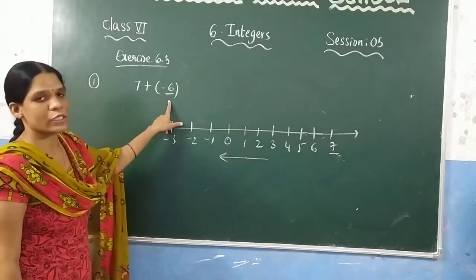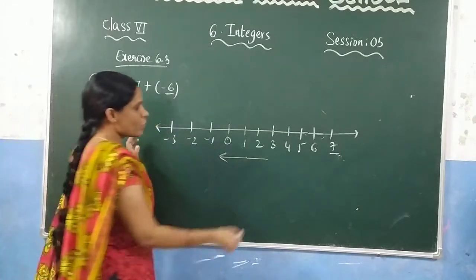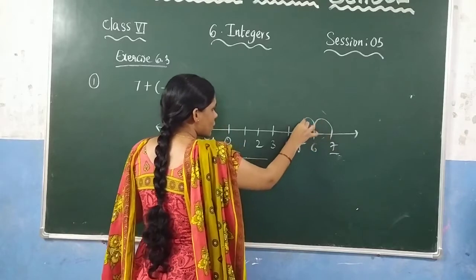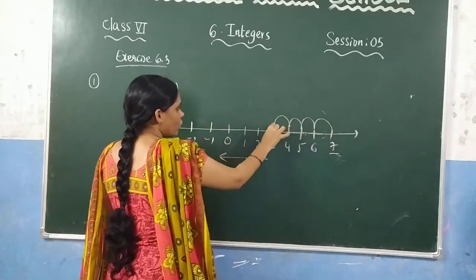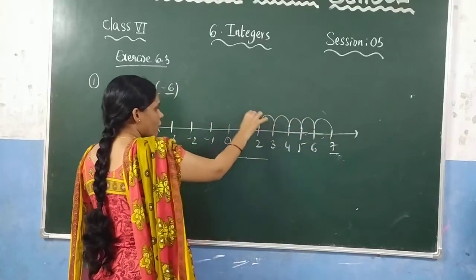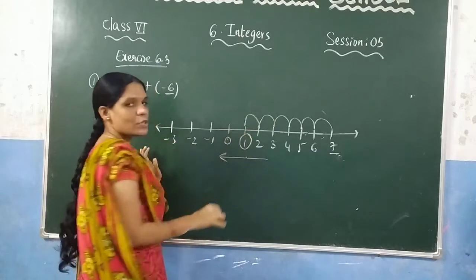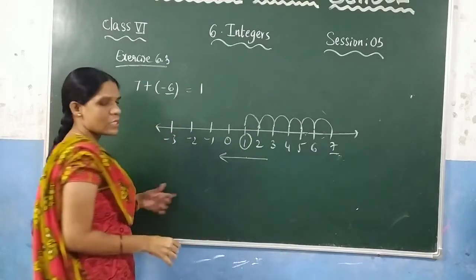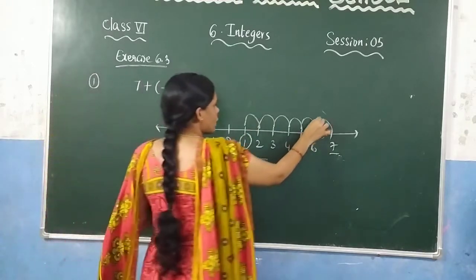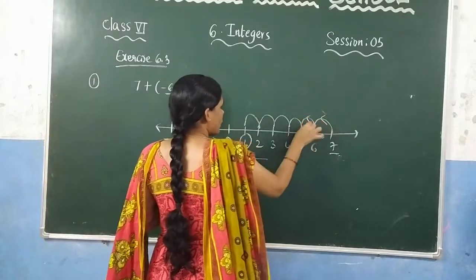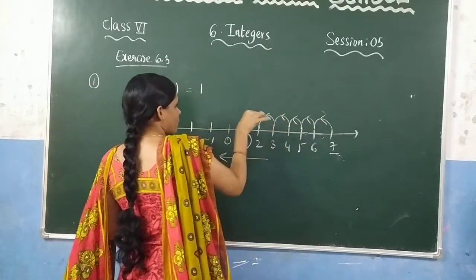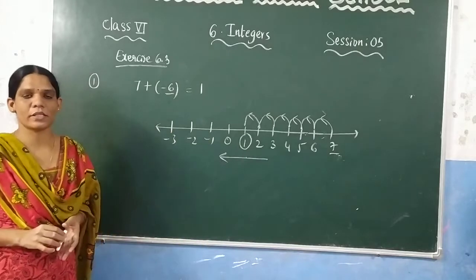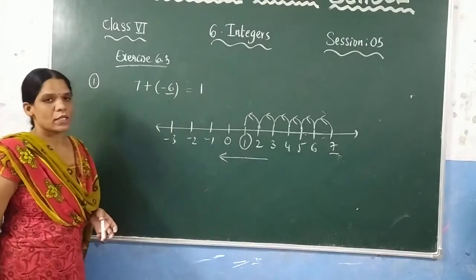Move 6 steps in the left direction: 1, 2, 3, 4, 5, 6. The answer is 1. Since we are moving in the left direction, draw the arrow accordingly. This is the representation of adding two integers on a number line.